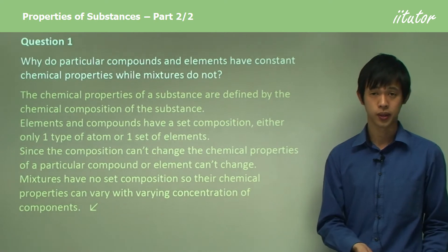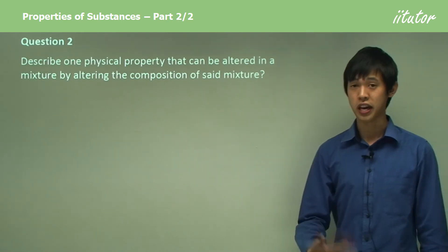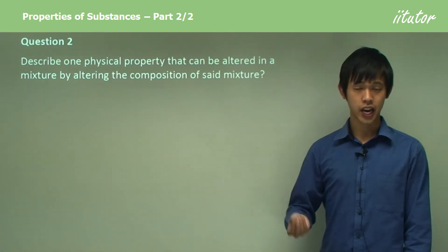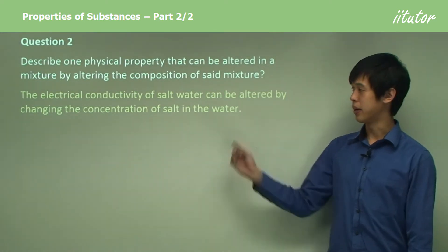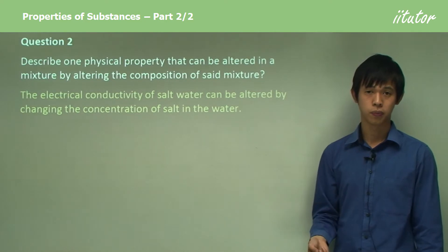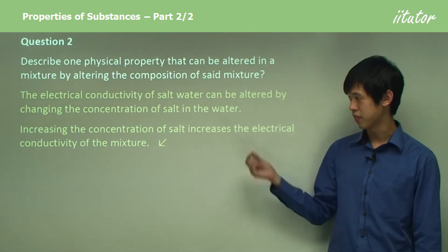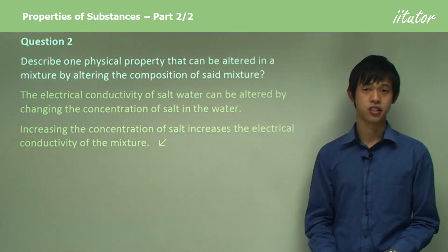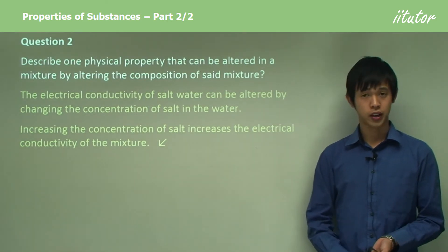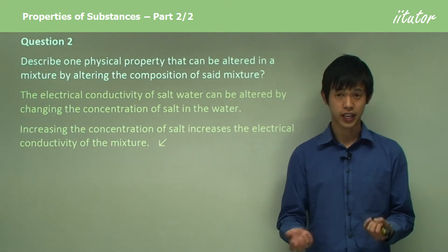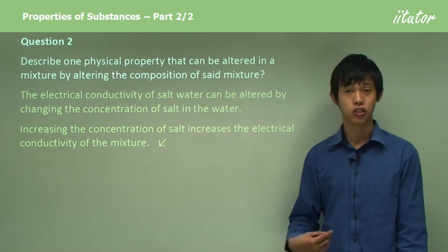Describe one physical property that can be altered in a mixture by altering its composition. An easy example is the electrical conductivity of salt water — it can be altered by changing the concentration of salt. If there is a lot of salt in the water it will be more conductive than if there is very little. Increasing the concentration of salt increases conductivity; decreasing it decreases conductivity. Another example is steel — adding more carbon makes it more brittle, while removing carbon makes it more malleable.